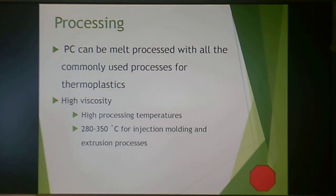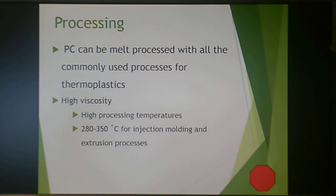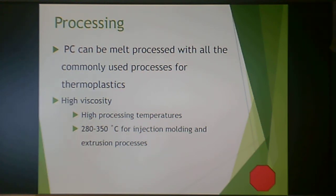Polycarbonate can be melt processed with all commonly used thermoplastic processes. The main challenge is its high processing temperature and high melt viscosity, requiring 280 to 350°C for injection molding and extrusion-based processes. This can be daunting, but as an engineering thermoplastic with a very high Tg, this is to be expected. This concludes the first half of the polycarbonate lecture.